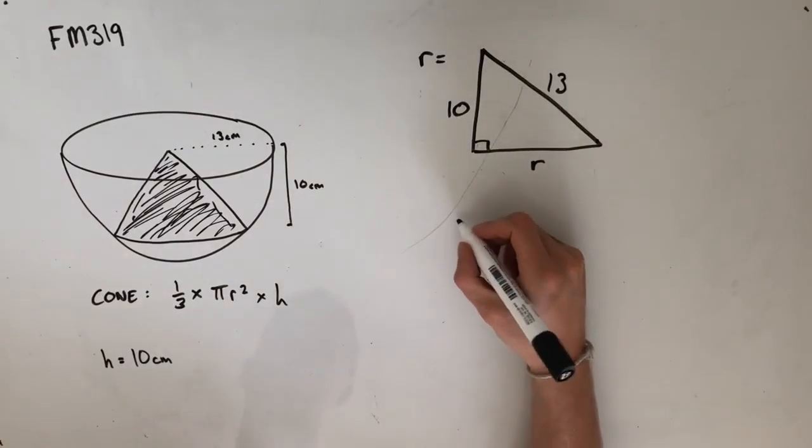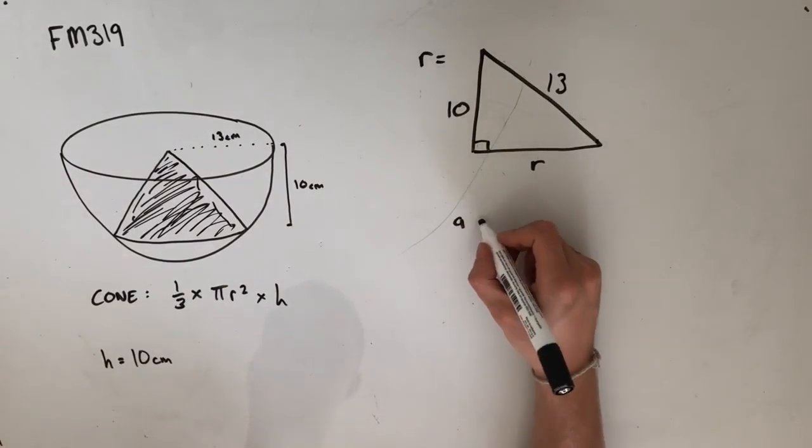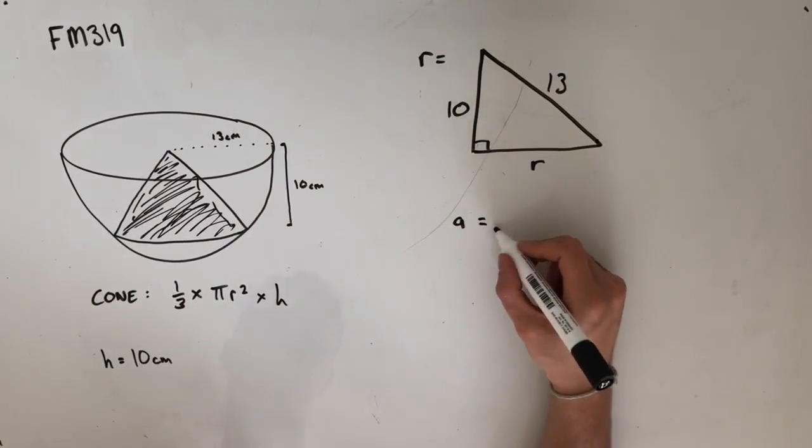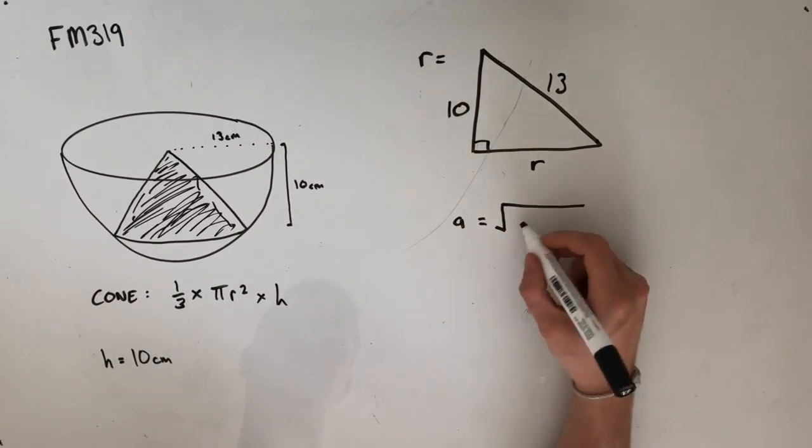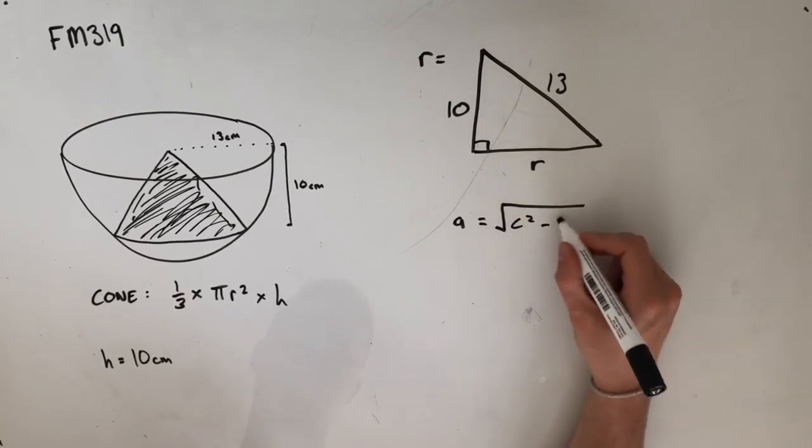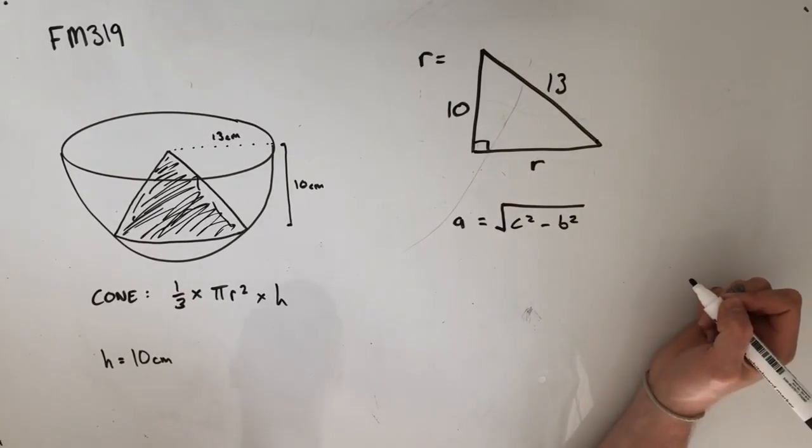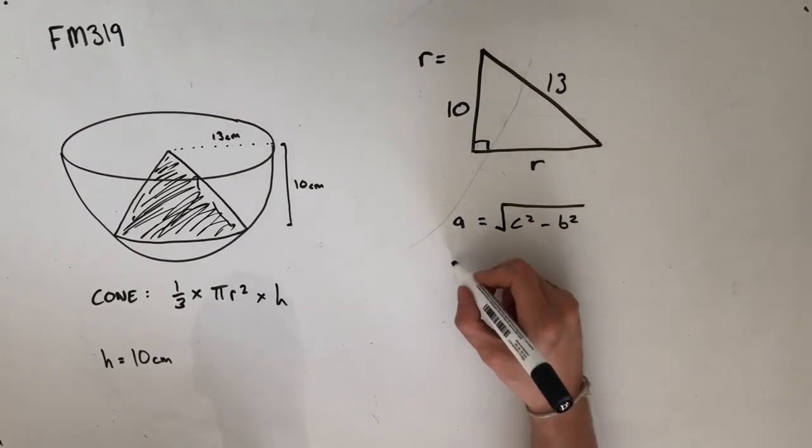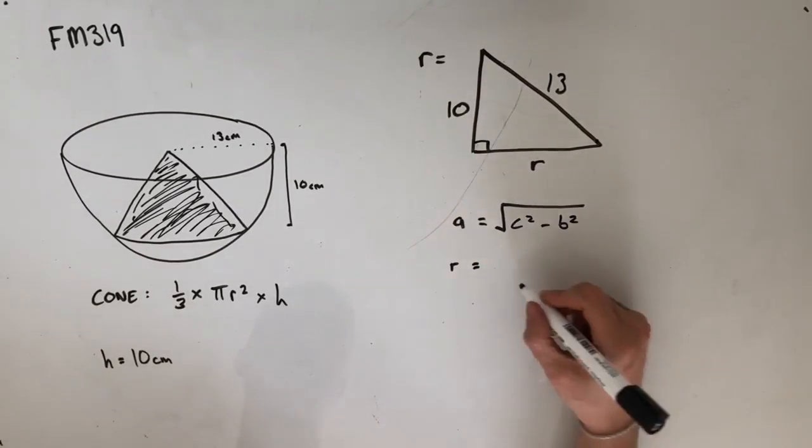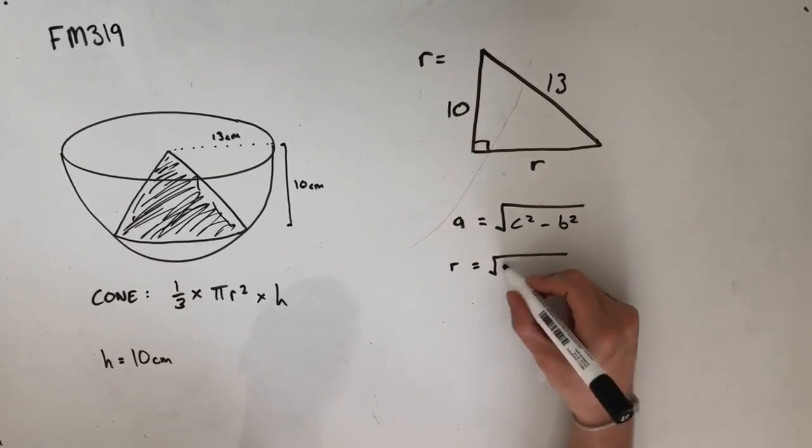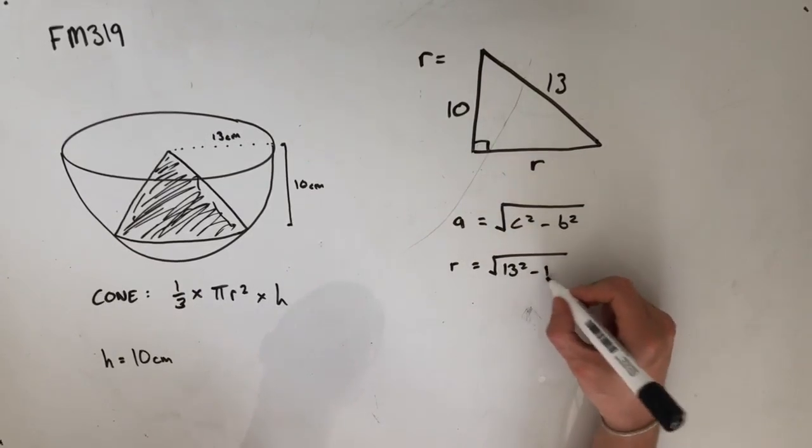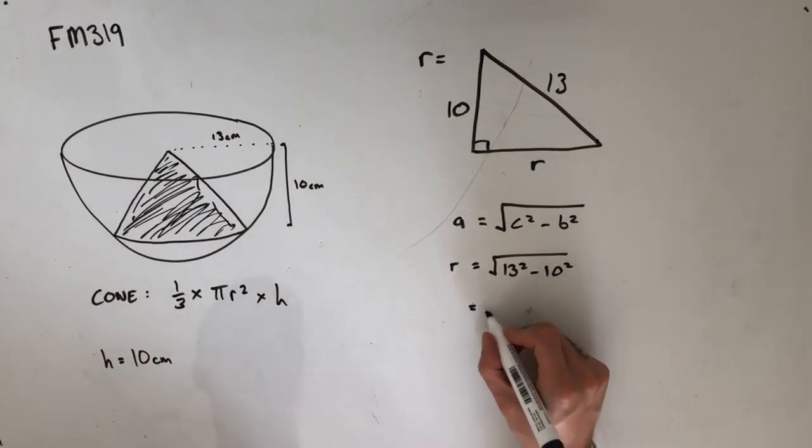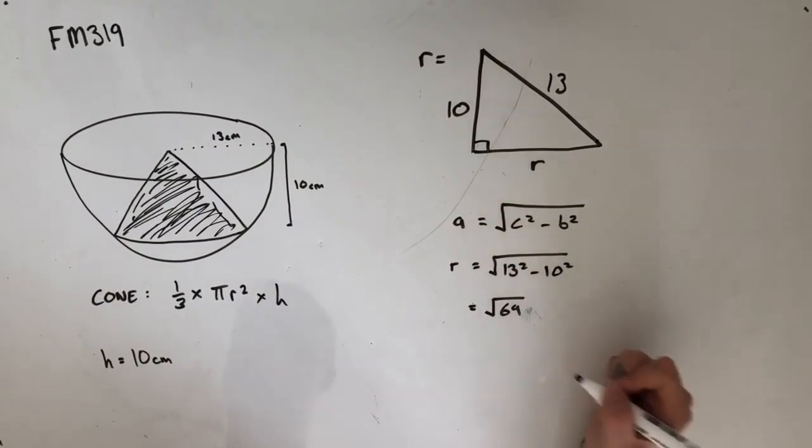Dropping in a little bit of a revised Pythagoras theorem equation, we've got a side length that isn't the hypotenuse is going to be equal to the square root of c squared minus b squared. So a equals root of c squared minus b squared. Substituting our variables in, we've got r equals the square root of 13 squared minus 10 squared. Whacking that into a calculator, you should get an answer of root 69.